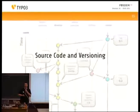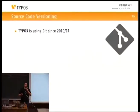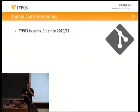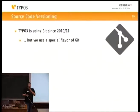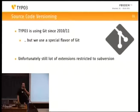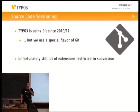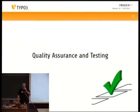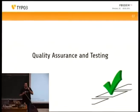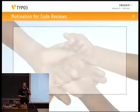Source code and versioning: we are using Git since mid-2007 for one product, and other products since the beginning of 2011. We are using a special flavor of Git — I will come to that very soon. One disadvantage is that because of us admins having limited time, there is not yet official Git support for all community extensions, so many of them are still limited to Subversion. We are about to change that hopefully within the next few weeks. Quality assurance and testing covers code reviews.